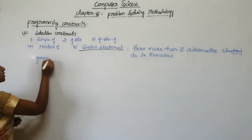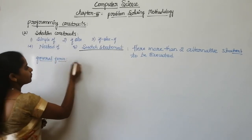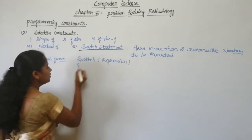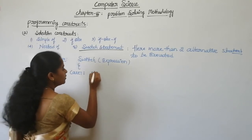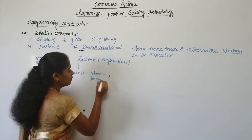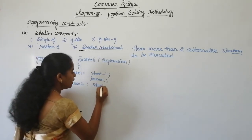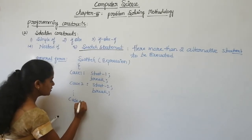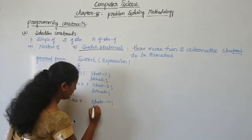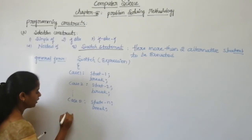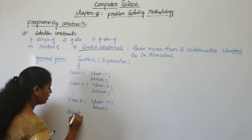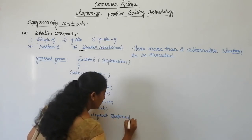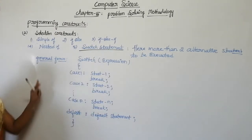In the switch statement there are more than two alternative statements to be executed. The general form is: switch (expression), then case 1 — statement one is executed, then break; case 2 — statement two is executed, then break; and similarly it continues till case n — statement n is executed, then break. If none match, the default statement is executed.